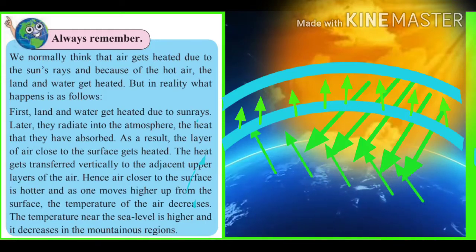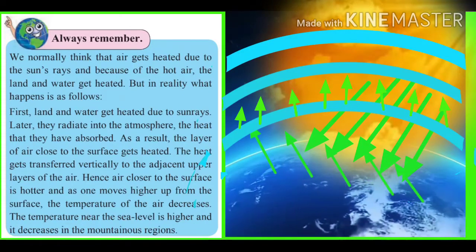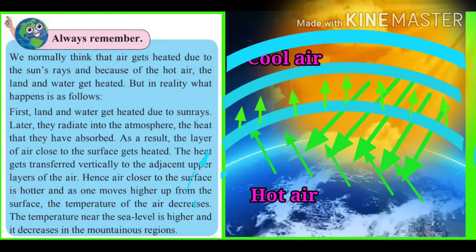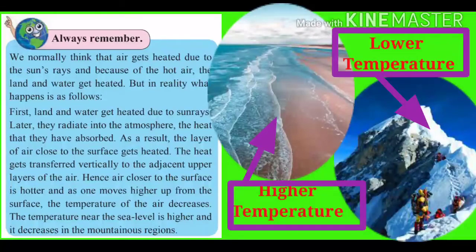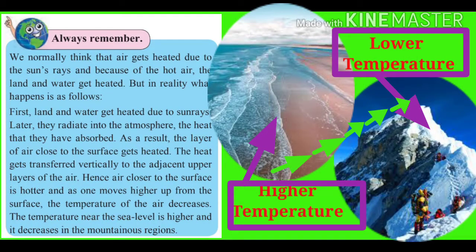Hence, air closer to the surface is hotter, and as one moves higher up from the surface, the temperature of the air decreases. The temperature near the sea level is higher and it decreases in the mountainous regions.